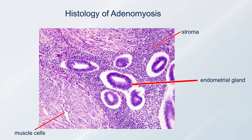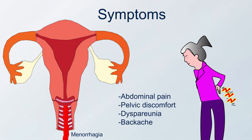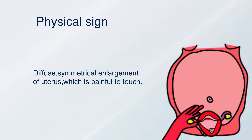Histologically, islets of endometrial glands surrounded by stroma are seen in between the muscle tissue. Adenomyosis is seen in parous women around the age of 40s. Symptoms include: some are asymptomatic; for some there is menorrhagia with progressively increasing dysmenorrhea; others have pelvic discomfort, backache, and dyspareunia. On examination there is diffuse symmetrical enlargement of the uterus, and it is painful to touch.